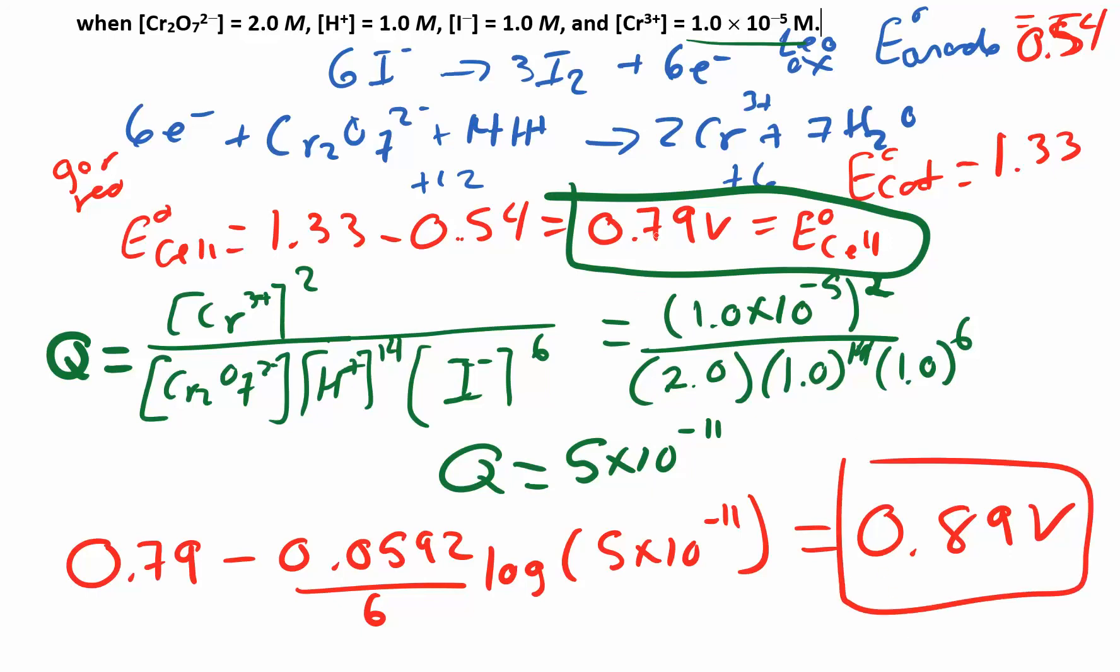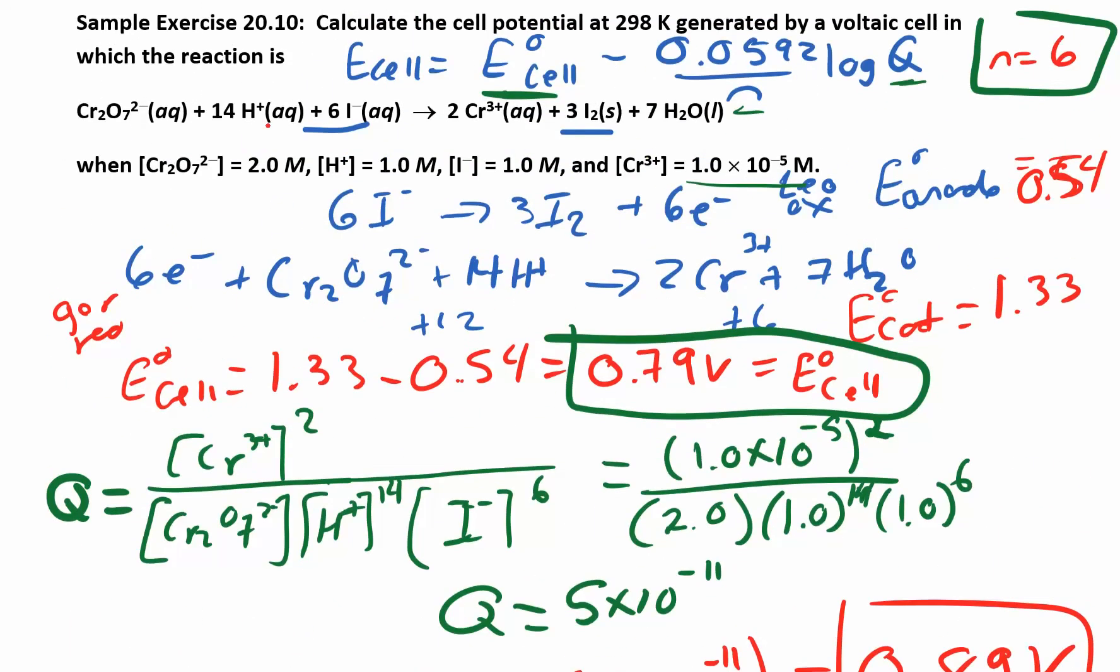Just to recap this one. What we did was just what we usually do. We found E°_cell first. You take this reaction, split it up into half reactions, figure out who's the anode, who's the cathode, figure out the number of electrons being transferred, number of moles of electrons being transferred. Calculate your E°_cell, cathode minus anode. And then the new part was just to add Q. Q is just products over reactants raised to the stoichiometric coefficients. Don't worry about solids or liquids. Even if they give you like a mass for the solid, don't worry about it. The solids and liquids don't go in the equilibrium constant expression or in the Q expression.